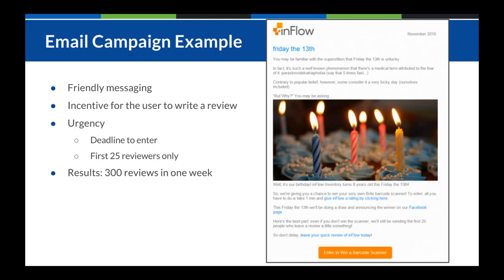Another great tactic in this email is urgency. Users will probably say 'I'll get to that later,' so by putting a deadline to enter and quantifying it — saying only the first 25 reviewers will get the incentive — you drive interaction. For this Inflow campaign, they had wonderful results: by rewarding users for helping them out, they ended up getting 300 reviews in just one week. As long as messaging is on point and you're emailing at the right time considering seasonality and day of week, you can see a huge bump in reviews very quickly.